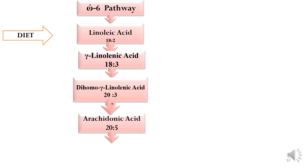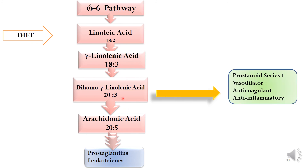Dihomo-gamma-linolenic acid is in turn converted to arachidonic acid, which is a 20:5 omega-6 fatty acid having 20 carbons and 5 double bonds. Arachidonic acid gives rise to prostaglandins and leukotrienes. Dihomo-gamma-linolenic acid also gives rise to prostanoid series 1. These molecules are vasodilators, anticoagulants, and anti-inflammatory — like the omega-3 fatty acids of prostanoid series 3 — so they are also cardioprotective in nature.